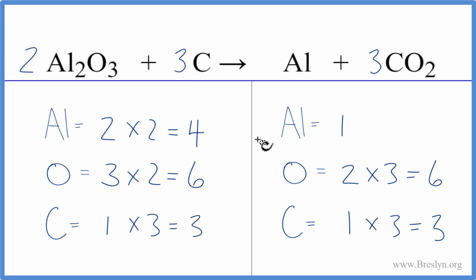And we said we left this aluminum to last. We need four aluminums. We only have one. We can just put a four in front of the aluminum. One times four, that'll give us four. And we are done. This equation's balanced.